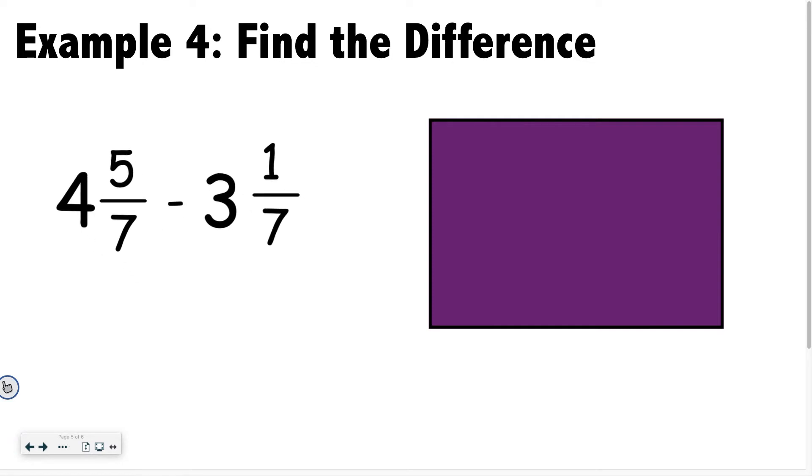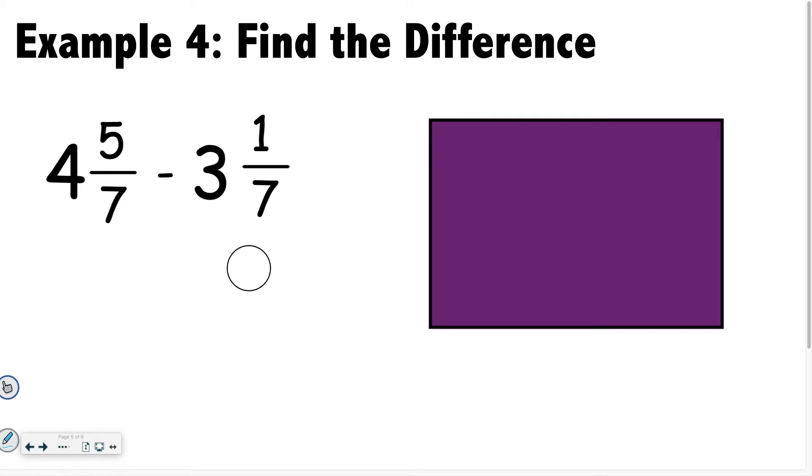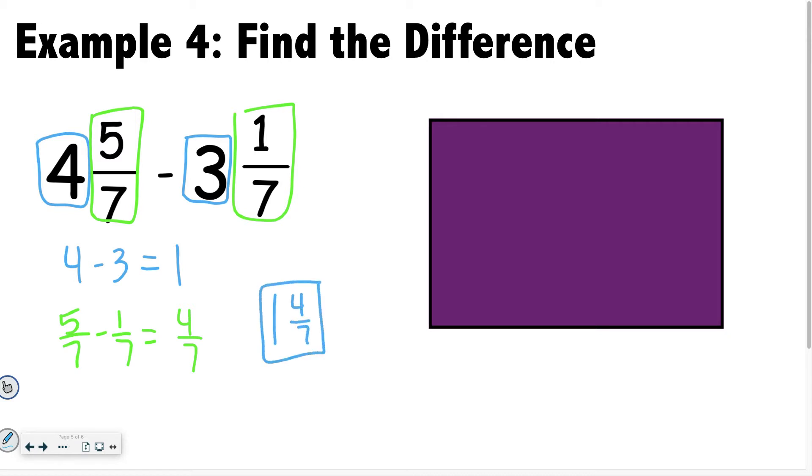All right, example 4. Now we're going to subtract along with our mixed numbers. So when you are subtracting with mixed numbers, you have a couple of options. Right away, we're going to start with, notice how this number is bigger? We're doing a bigger minus a smaller. That's easy. When you do a big minus a small, it's not that tricky. You're going to do your whole number minus your whole number, so 4 minus 3. And then you're going to do your fractions. You have 5 sevenths minus 1 seventh. So 5 sevenths minus 1 seventh equals 4 sevenths. So your answer is 1 and 4 sevenths. That's it. That's your final answer.